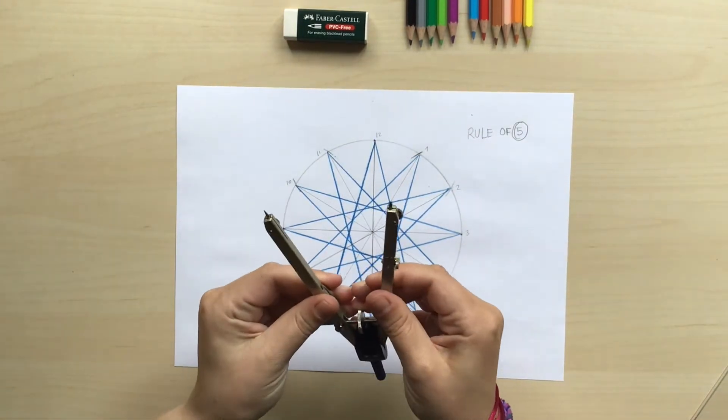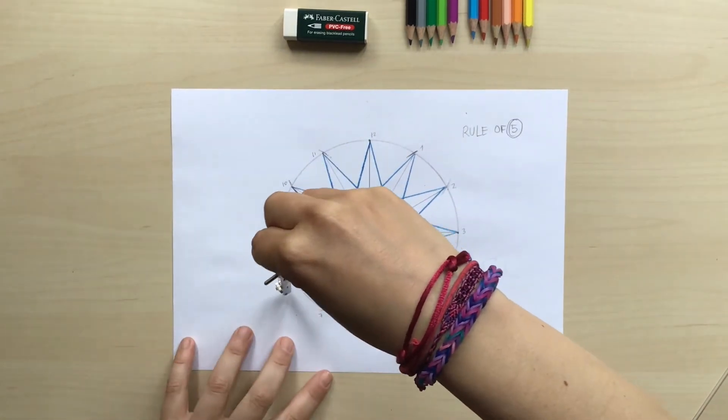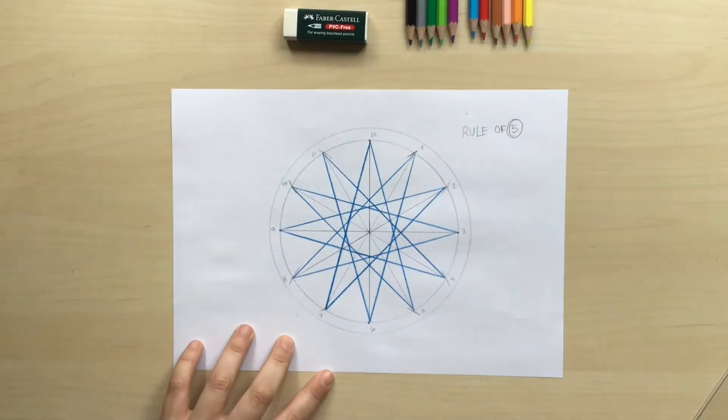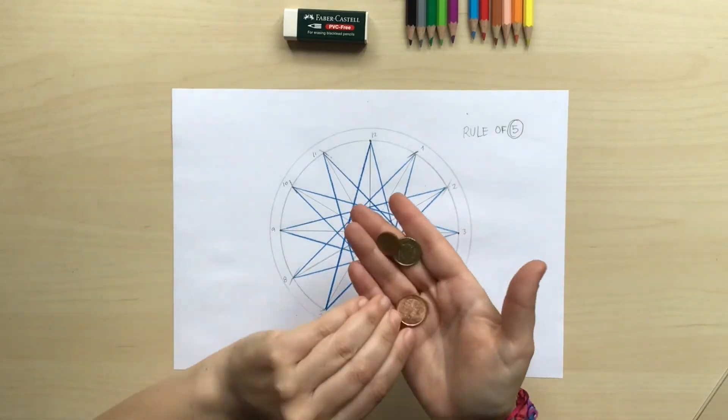We're gonna grab our compass again and we're gonna open it a little bit more than the radius and we're gonna draw an outer circle that's gonna frame our rose window.